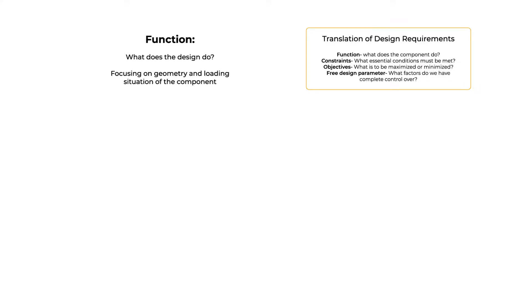The first is the function of the design — what does it do? By function in our case, we often mean the geometry and the load situation of the component we're designing. The loading on a component can generally be decomposed into some combination of axial tension or compression, bending, and torsion. Almost always, one mode dominates. This is so common that the functional name given to the component describes the way it's loaded.